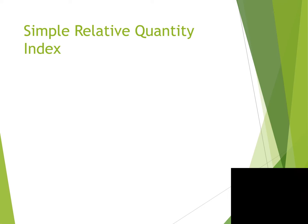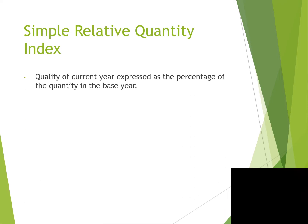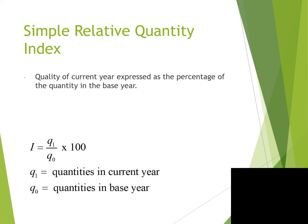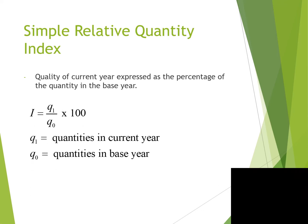Simple Relative Quantity Index: The quantity of the current year is expressed as a percentage of the quantity in the base year. Formula: I = (Q₁ / Q₀) × 100, where Q₁ is the quantity in the current year and Q₀ is the quantity in the base year.